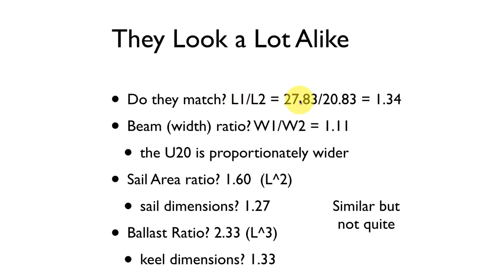We could compare the length ratios, about 28 feet to about 21 feet, which gives us about 1.34 in terms of scaling up the size. If they scaled up by that factor, we'd expect the width ratio to also be 1.34. But comparing the numbers we get 1.11. That tells us the Ultimate 20 is proportionately wider than the Antrim 27, so the shapes aren't quite the same.